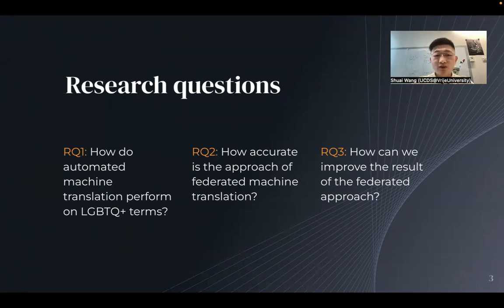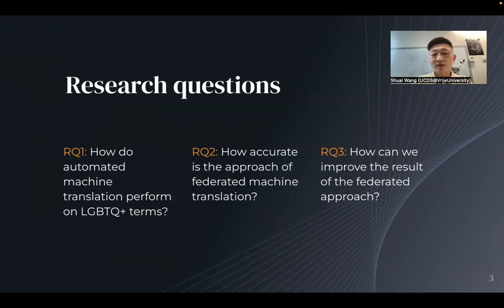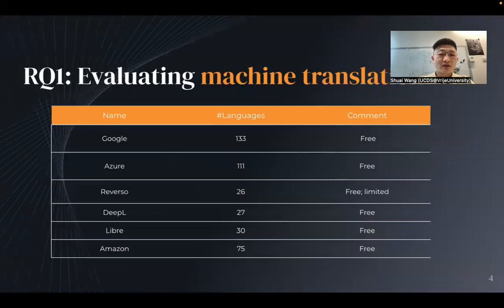Our first research question is: how do automated machine translators perform on LGBTQ+ terms? The second research question is: how can we evaluate this federated machine translation approach? The third is: how can we improve the results of this federated approach?